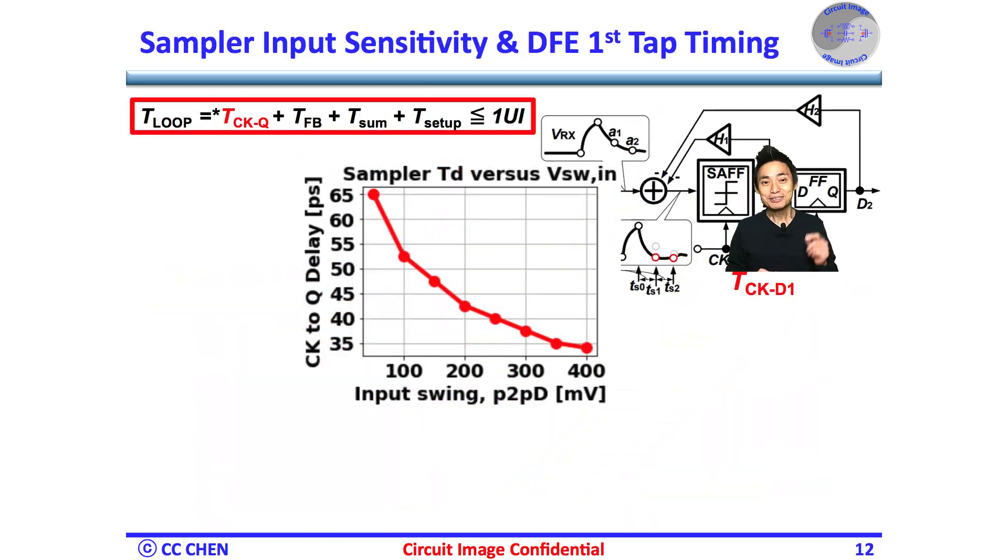Bingo! The final decision-maker is the sampler, which is also called a comparator or strong arm latch. Remember, the image from the Why Not DFE Only video is that the sampler needs to take the tiny input swing to convert or regenerate to the full swing by the positive feedback.